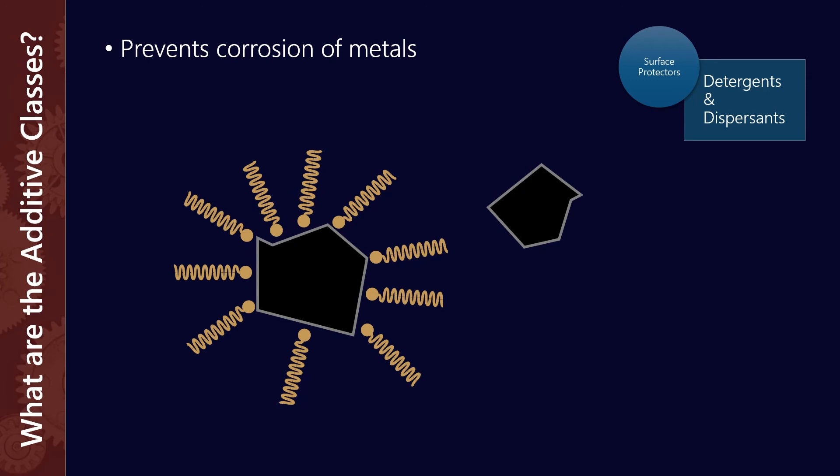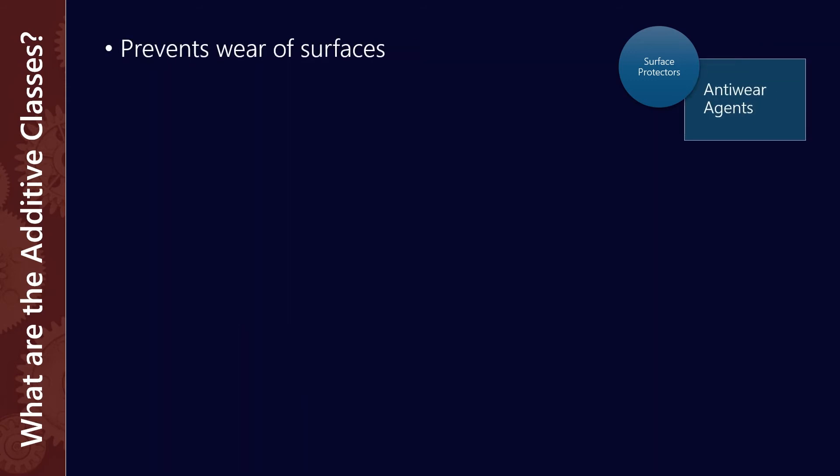Detergents are slightly different—dispersants keep particles away from each other, while detergents actually have a keep-clean function and can clean surfaces. They act in very similar ways, but dispersants tend to be much higher molecular weight.